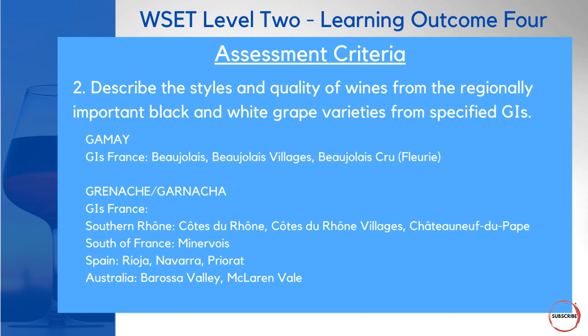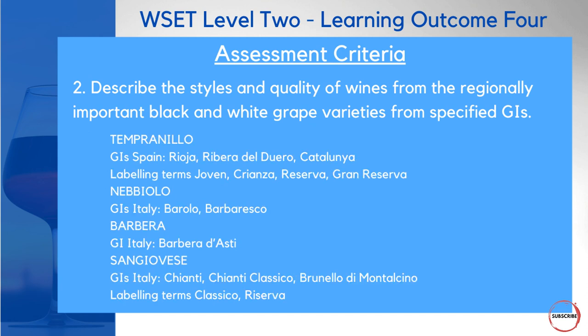Let's move on to assessment criteria number 2: describing the styles and quality of wines from regionally important specified geographical indicators. I'll pick out a couple on each slide. Gamay: Beaujolais, which can be labelled Beaujolais, Beaujolais Villages, or Beaujolais Cru depending on quality. Grenache or Garnacha: in Spain it's Garnacha; in France it's popular in the Southern Rhône for blends. For Tempranillo: Rioja, Ribera del Duero, and Cataluña, with labelling terms from Joven through to Gran Reserva based on barrel and bottle aging.